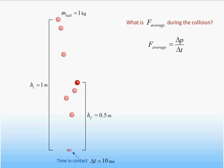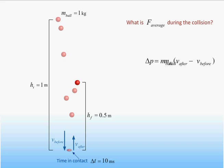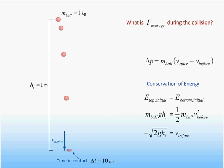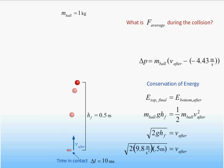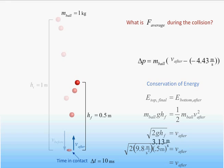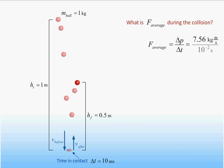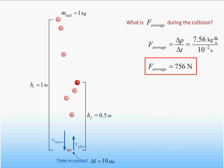To determine the average force acting during the collision, we need to first determine the change in the momentum of the ball. We can use conservation of energy during the ball's initial free fall to determine the ball's velocity just before it hits the floor, and we find that it is proportional to the square root of the height from which it was released. Putting in the numbers, we obtain a speed of 4.43 m/s. Note that the initial velocity of the ball is taken to be negative since it is moving downward. We can also use energy conservation to determine that for the ball to rebound to a height of half a meter, it must have had a speed of 3.13 m/s immediately after it left the floor. The change in momentum of the ball during the collision is therefore equal to 7.56 kg·m/s. We can now determine the average force by dividing this change in momentum by the duration of the collision to obtain the value of 756 newtons.